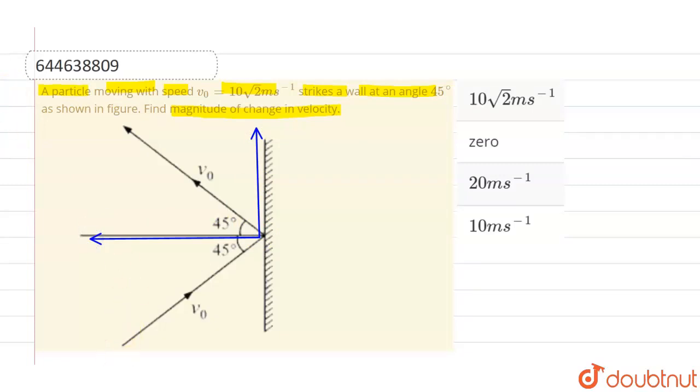And this particular v0 is again resolved into two components, let's this is the first component and this one is the second component. Now, we know that this particular component will be v0 cos of 45 degree. Since this angle will also be equal to 45 degree and this particular will be v0 sin 45 degree. And this component of this initial v0 is also v0 cos 45 degree. And this component is again v0 sin 45 degree.